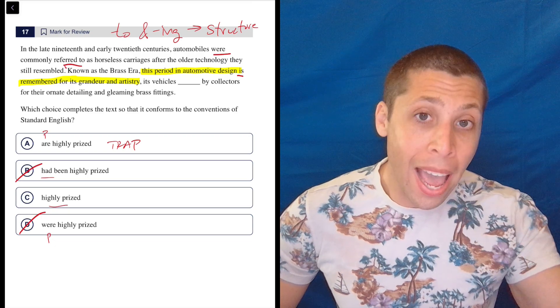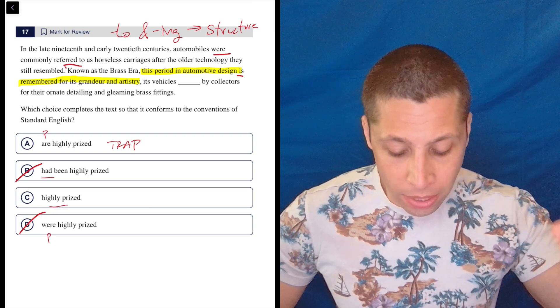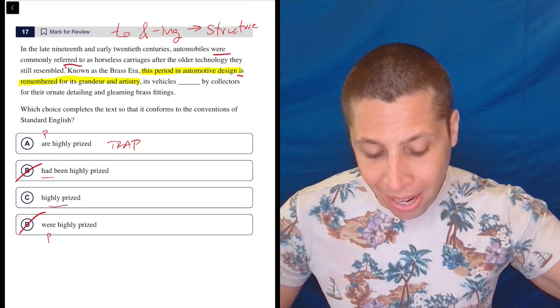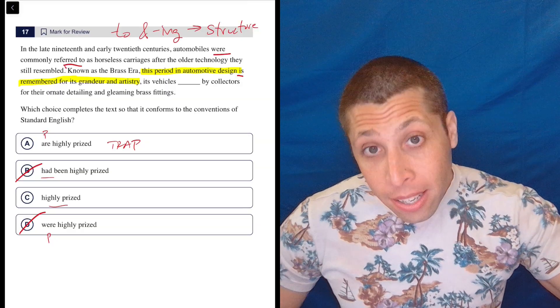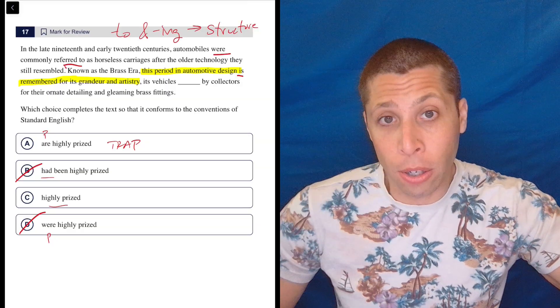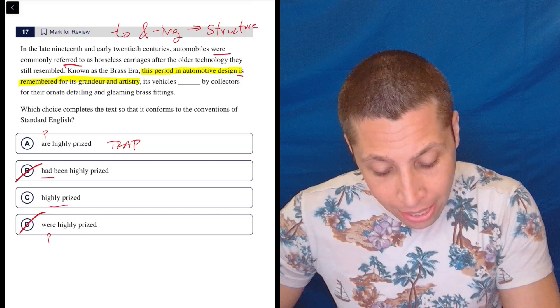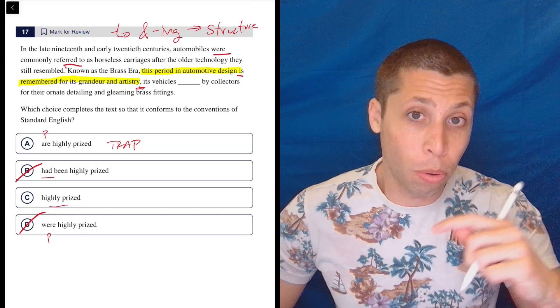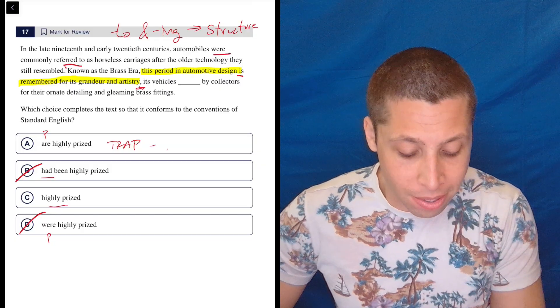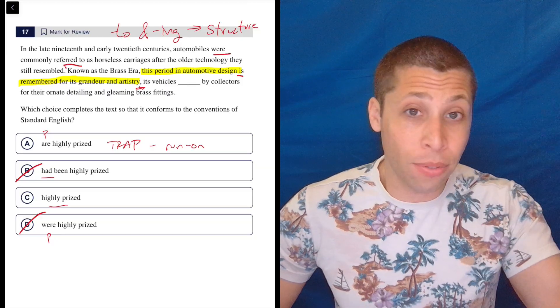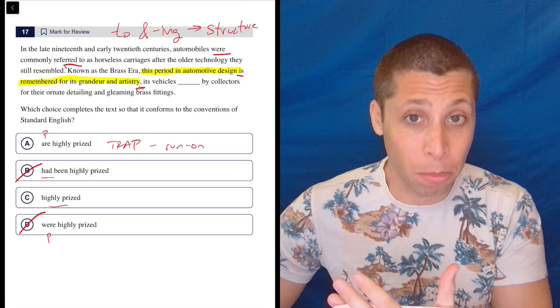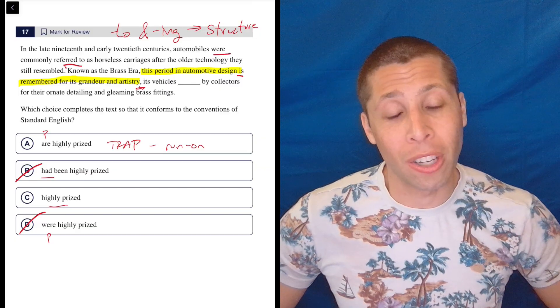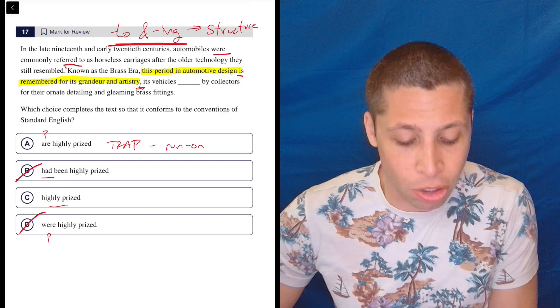But if we put choice A in that blank, 'its vehicles are highly prized by collectors for their ornate detailing and gleaming brass fittings,' that's another sentence. It could stand alone. And so that comma right there is not enough for us to join those two things together. So it creates a run on sentence, even though it sounds fine. The punctuation is the issue, right? So we think this is a question about verbs. It's really a question about punctuation.